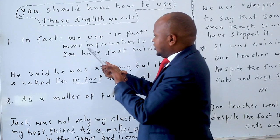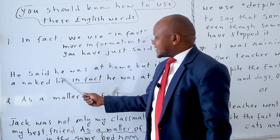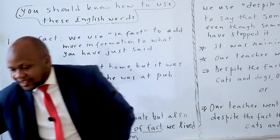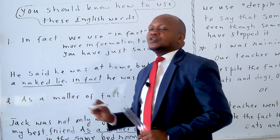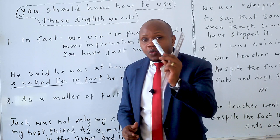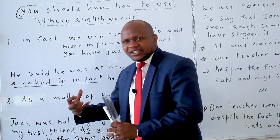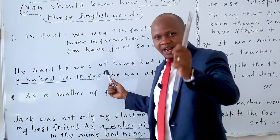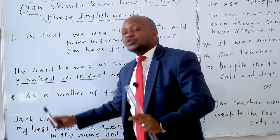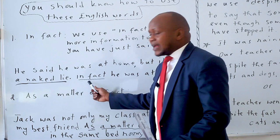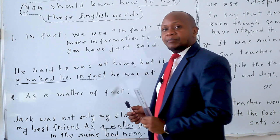That is the use of 'in fact.' For example, you can say: 'He said he was at home, but it was an outright lie. In fact, he was at the pub.' Here I'm using the conjunction 'in fact' to add more information — he claimed to be at home, but in fact he was at the pub. That is it.